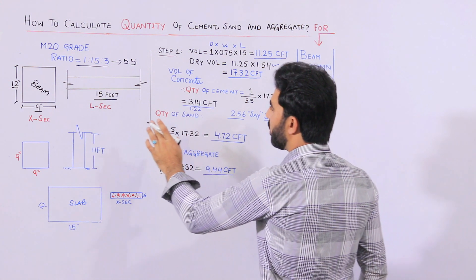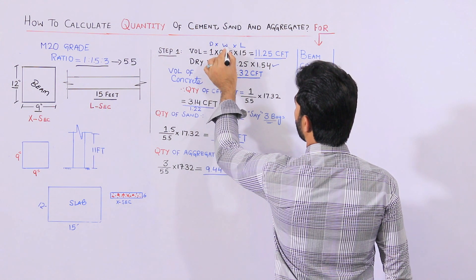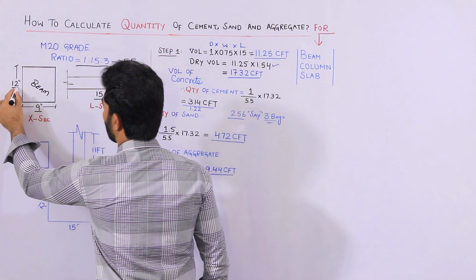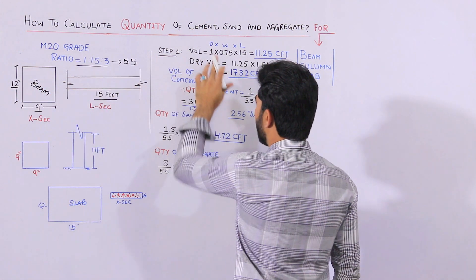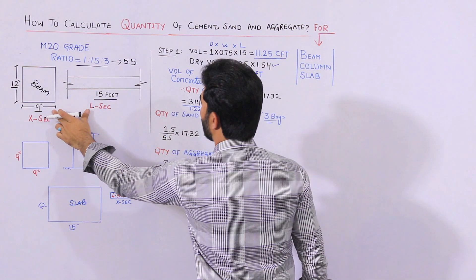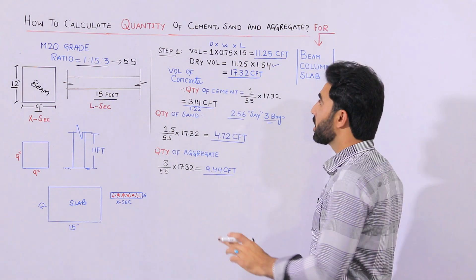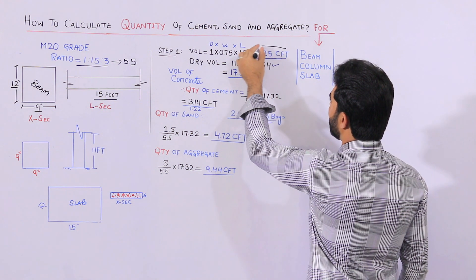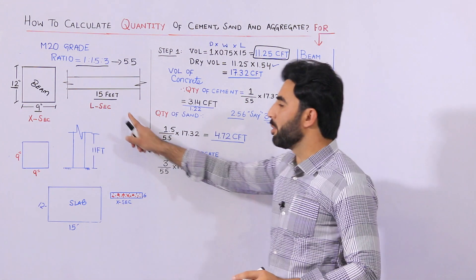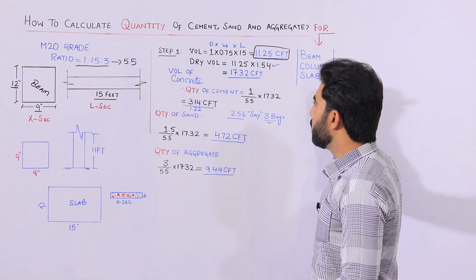Step number one: Volume of beam. Volume equals depth × width × length. The depth of the beam is 12 inches, which is 1 foot. The width is 9 inches, which converts to 0.75 feet. The length is 15 feet. When you do the calculation, the volume of this beam is 11.25 cubic feet.